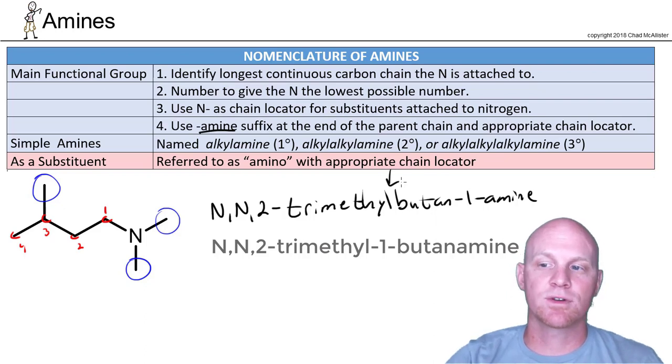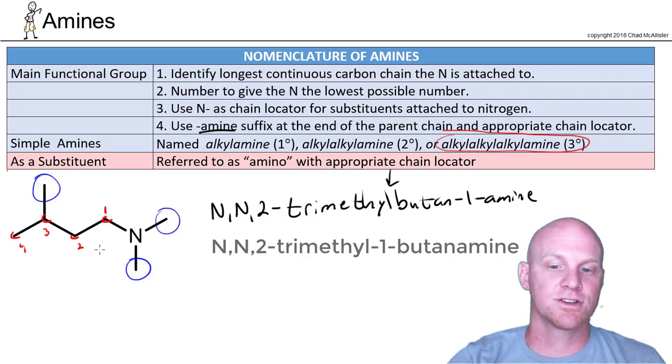If we were going to try and name this in some sort of common way, so as a simple amine, well, one, it's not that simple. So this is about as complex as you're going to start getting and maybe get away with this. And probably at this point, we just go with the systematic. But just in case you want to see, so this is a five-carbon chain, and it's an isopentyl group. And that's pretty much bigger than you're probably going to see anything you've got to do for a simple name.